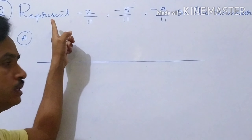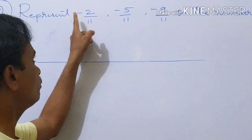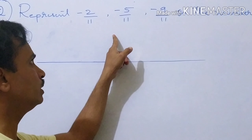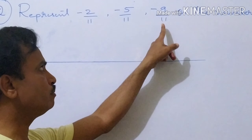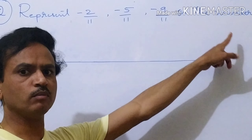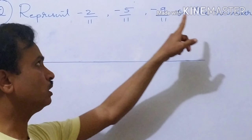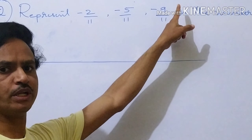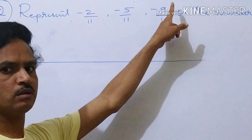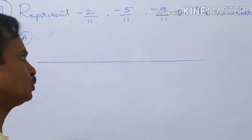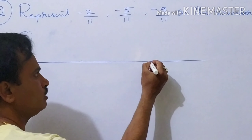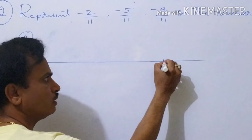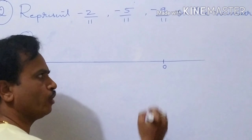Question number 2: represent minus 2 by 11, minus 5 by 11, minus 9 by 11 on the number line. Here all negative numbers are there in the numerator. So what we should do: first we should draw one line, then mark 0 at any point.